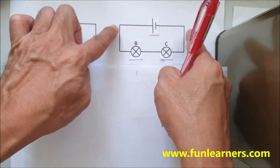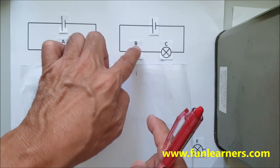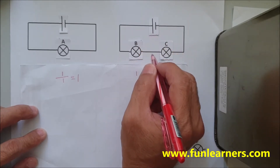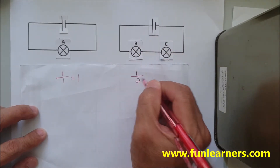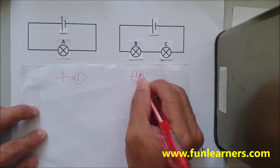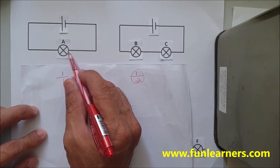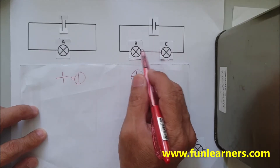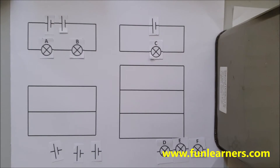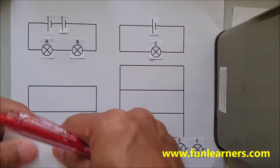Now for the second circuit, this is one battery again, but it encompasses two light bulbs — B and C. So B and C will have the same brightness. How bright is it? It's one battery divided by two light bulbs, so it's one half. Which is stronger — one or one half? Obviously one. So A will be brighter than B and C, and B and C have the same brightness.